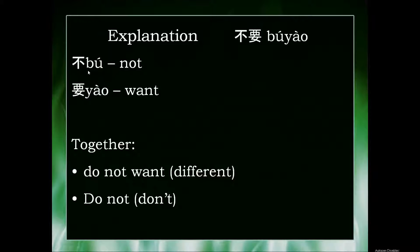Bú means 'not' and Yáu means 'want,' so together you're probably familiar with the first sense: 'do not want,' right? I don't want something — Bú Yáu. But there's another sense which is very much related, and is the purpose of this video: 'do not' — in other words, an instruction for someone to not do something — Bú Yáu.